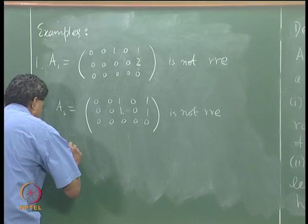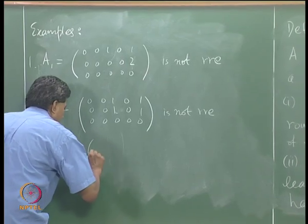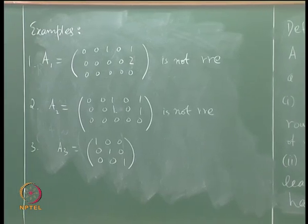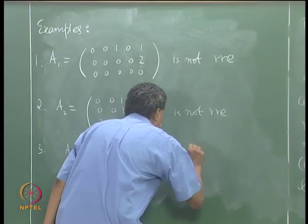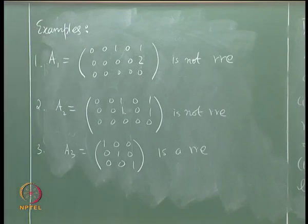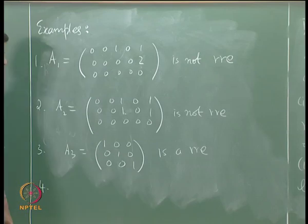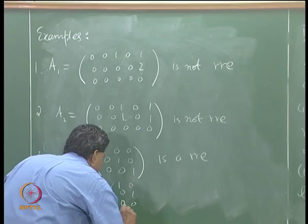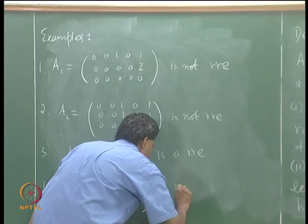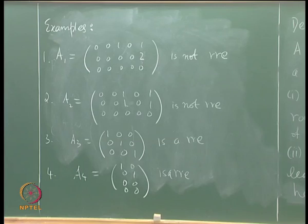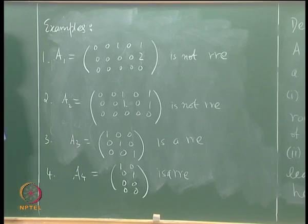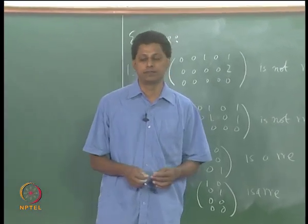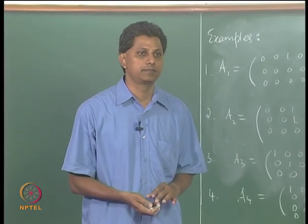Example A3 is the simplest row reduced echelon matrix — the identity matrix. Example A4, the matrix [1, 0, 0, 1; 0, 0, 0, 0; 0, 0, 0, 0], is also a row reduced echelon matrix. We will discuss further properties of RRE matrices and how they help in solving non-homogeneous systems in the next lecture.